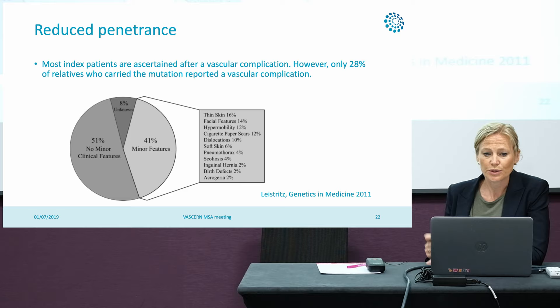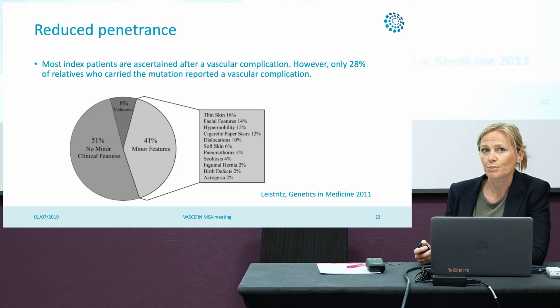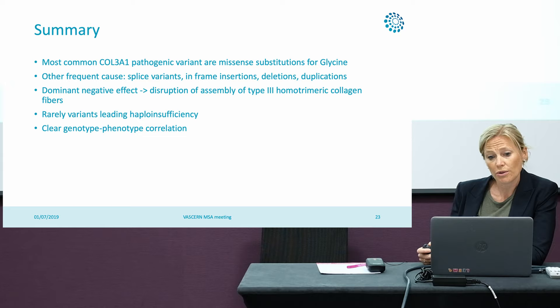We also see reduced penetrance in patients with haploinsufficient mutations. Most index patients are ascertained because they had a vascular complication, but looking at their relatives, only 28% have a vascular complication. They more often have vascular complications and less frequently bowel or obstetric complications, and in more than half of patients there are no minor clinical features.